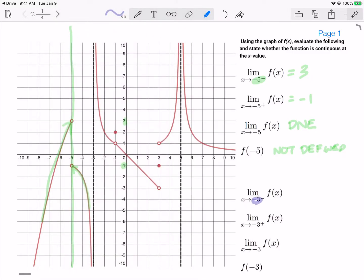Now if we look at negative 3, negative 3 from the left, I'm coming down this part right here, and it looks like I'm going down to negative infinity.